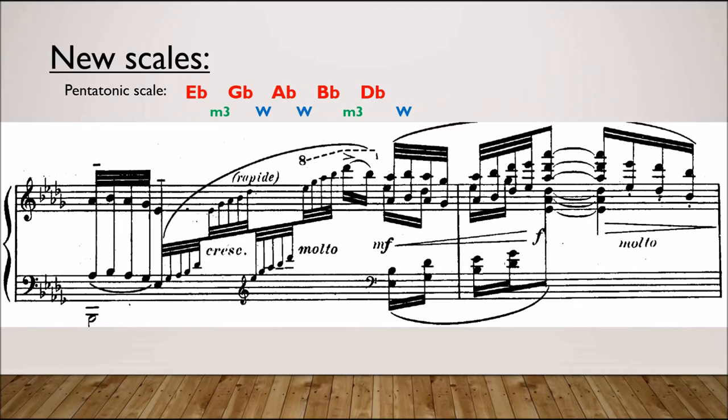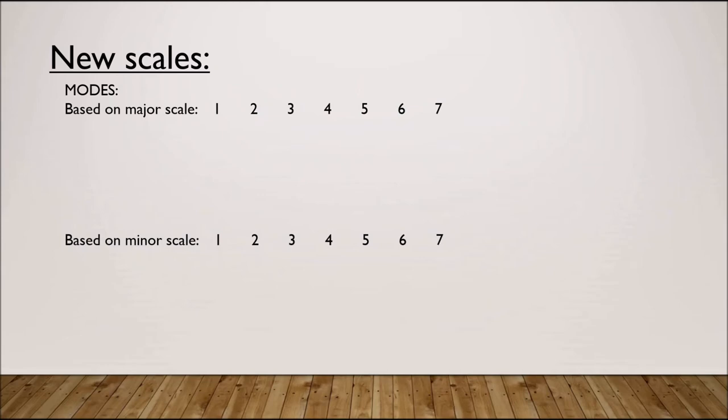Getting rid of half steps was one method for avoiding a tonal center. But by using the seven different modes, Debussy was easily able to control color and pitch center as two separate entities. Let's take a look at them.